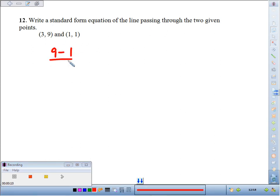So let's find that first. Y minus Y over X minus X. We're looking at a slope of 8 over 2, a slope of 4.